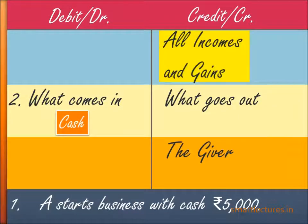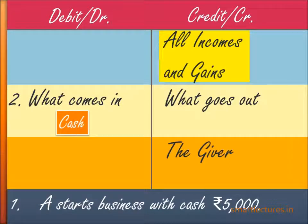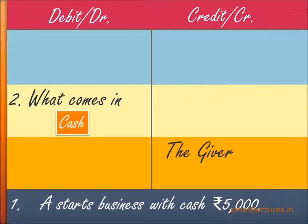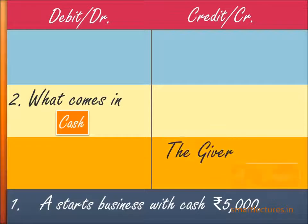Now move to the credit side. Number one: credit all incomes and gains. Is there any income or gain for the firm? No — the firm has received money to do business; it's not income, it's not a gain. Move to option two: credit what goes out. Is anything going out? No. Move to option three: credit the giver. The money has come in, and who is the giver? The giver is A, the owner of the firm. So write down 'A' or 'the owner.' We now have the debit — Cash — and the credit — A (Capital).